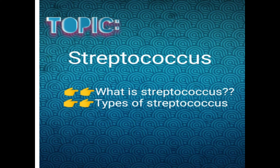As you know, Streptococcus is a branch of coccus. Streptococcus refers to conditions in which there are curved cocci arranged in a straight chain. Streptococcus pneumoniae is the best example of Streptococcus.